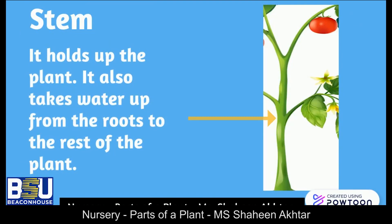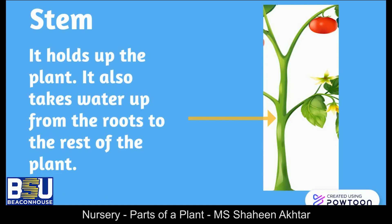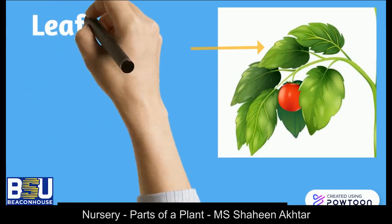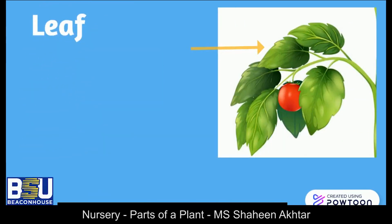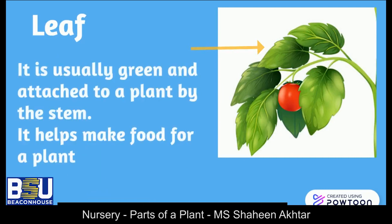Stem — do you know the function of a stem? It holds up the plant. It also takes water up from the roots to the rest of the plant. Leaf — it is usually green and attached to a plant by the stem. It helps make food for the plant.